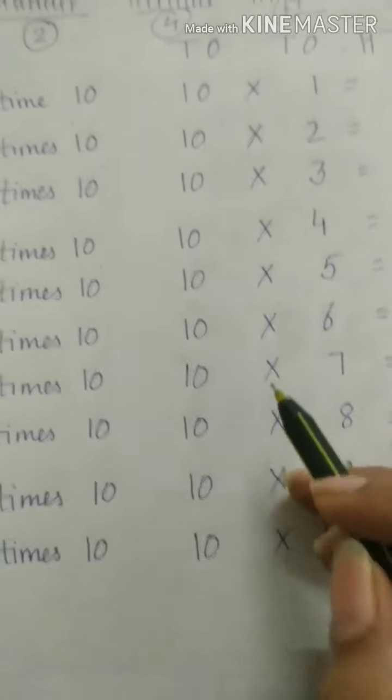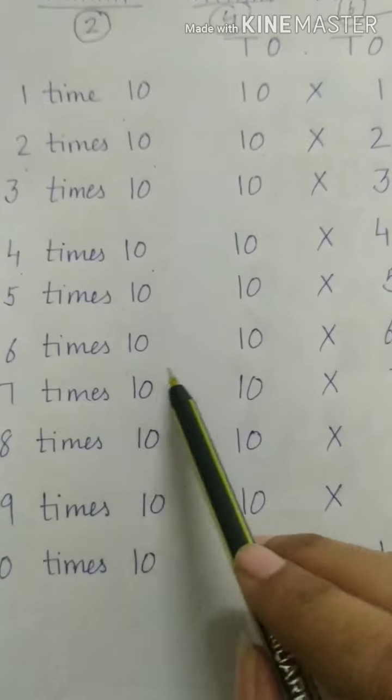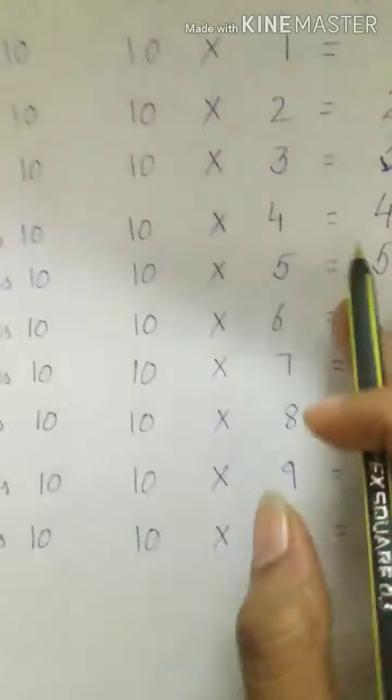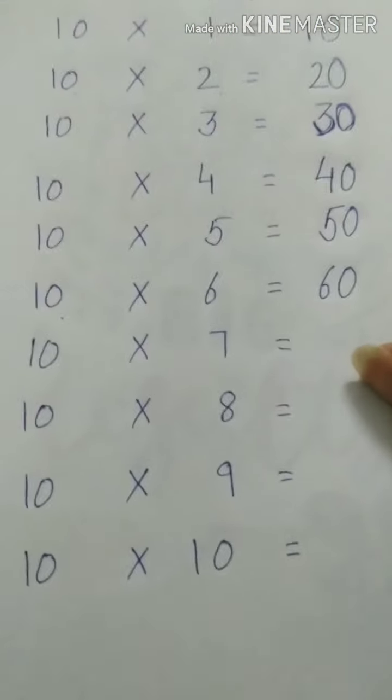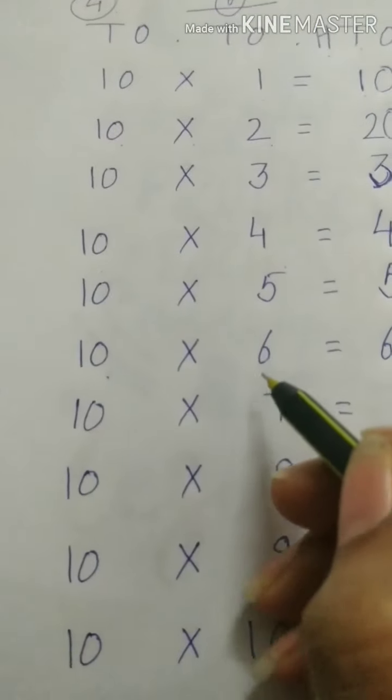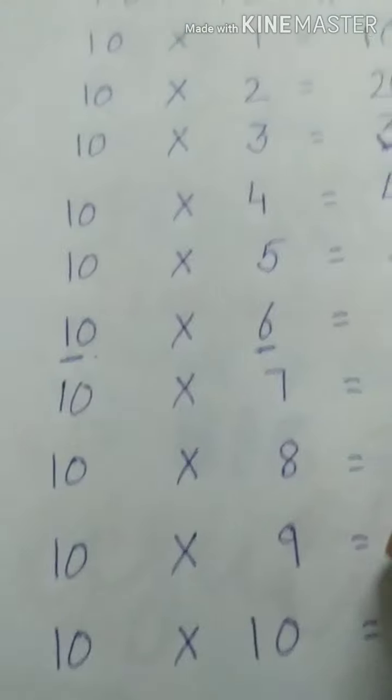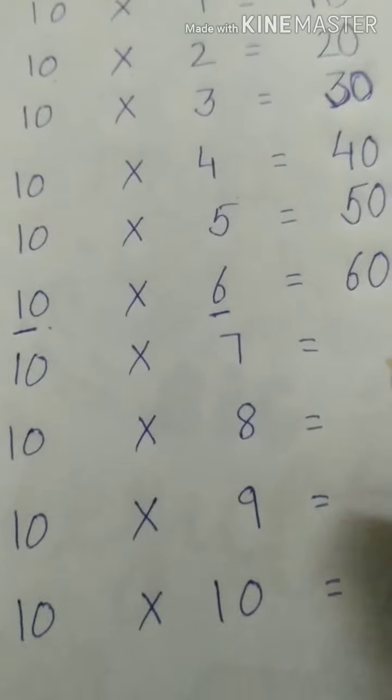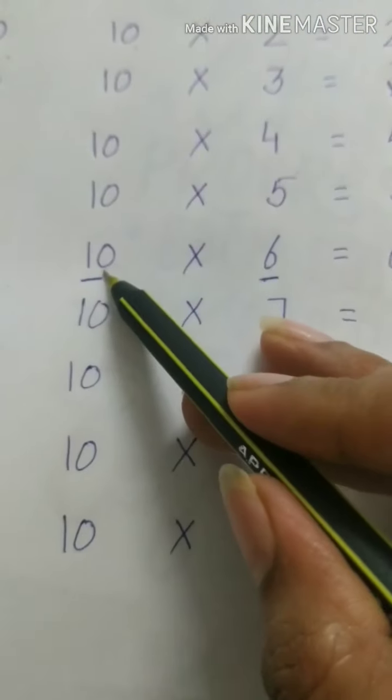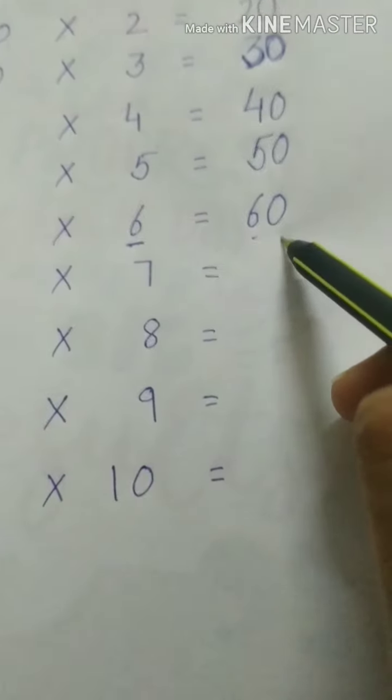So what I am going to do here is 6 times 10. That means 10 sixes. What I will write 10 sixes directly 60. And now you will be wondering how 60. What we need to do is we will simply think 1 times 6. What is 6 ones? 6. I have written 6 here and 0 was there so I have added 0 as well.